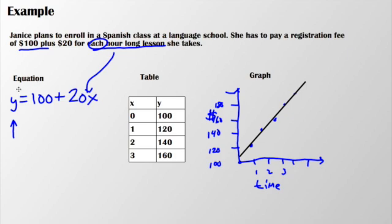And again, you can represent it as an equation, as a table, and as a graph. All functions really should be identified as an equation, table, and a graph, or could be identified that way.